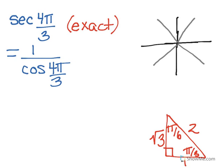And we're going to take 4π over 3. So this would be π over 3, 2π over 3, 3π over 3, 4π over 3. So all the way around there gives us 4π over 3.